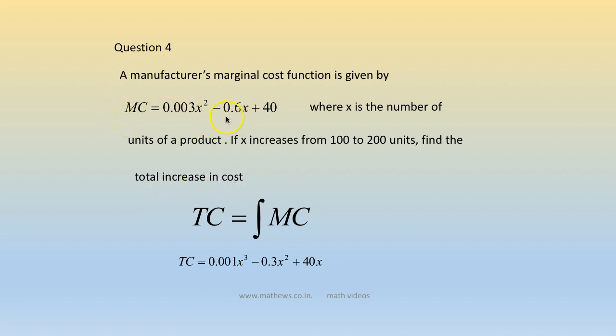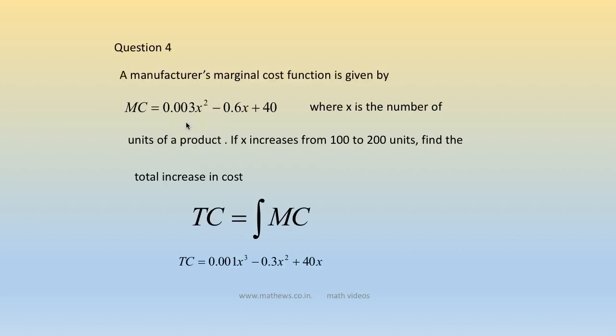Total cost is the integral of marginal cost, giving 0.001x³ - 0.3x² + 40x. To find the total increase in cost from 100 to 200 units, we compute total cost at x = 200 minus total cost at x = 100, which gives a difference of 2000.